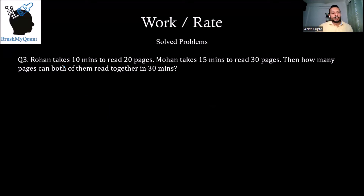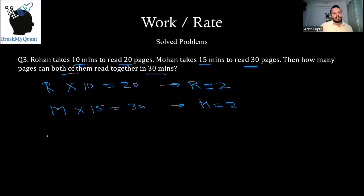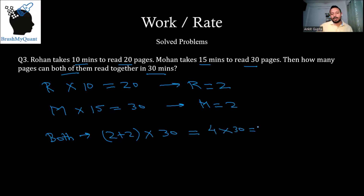Problem: Rohan takes 10 minutes to read 20 pages and Mohan takes 15 minutes to read 30 pages. How many pages can both read together in 30 minutes? Rate of Rohan = 20/10 = 2 pages/min. Rate of Mohan = 30/15 = 2 pages/min. Combined rate = 4 pages/min. In 30 minutes: 4 × 30 = 120 pages.